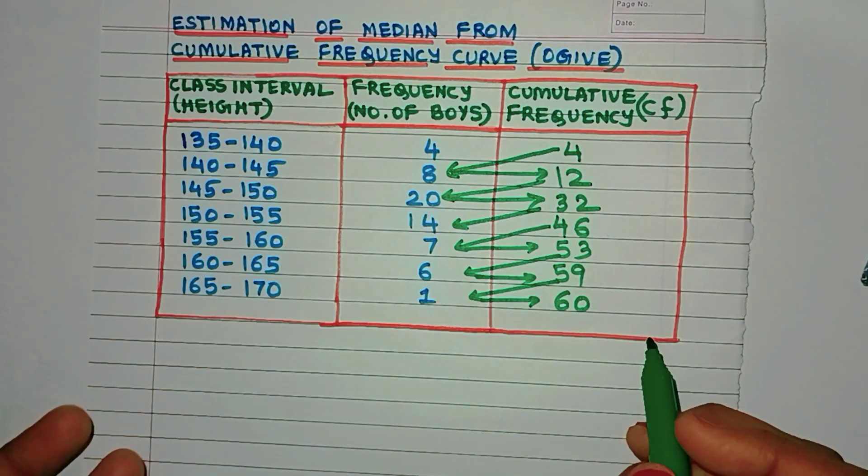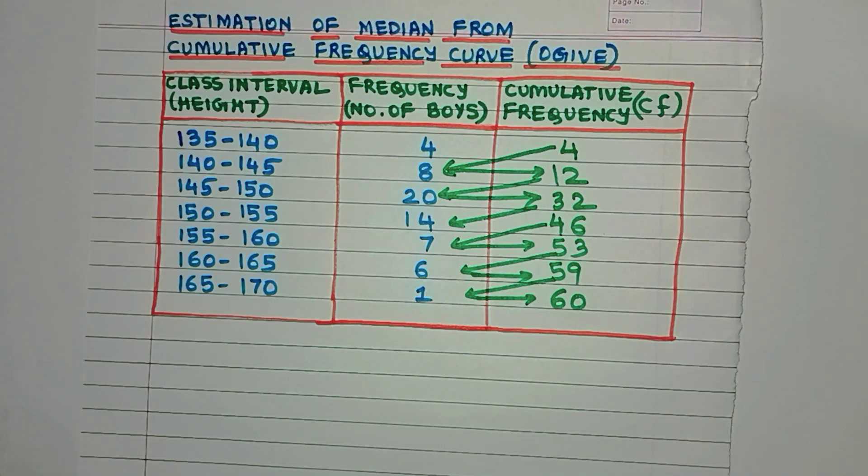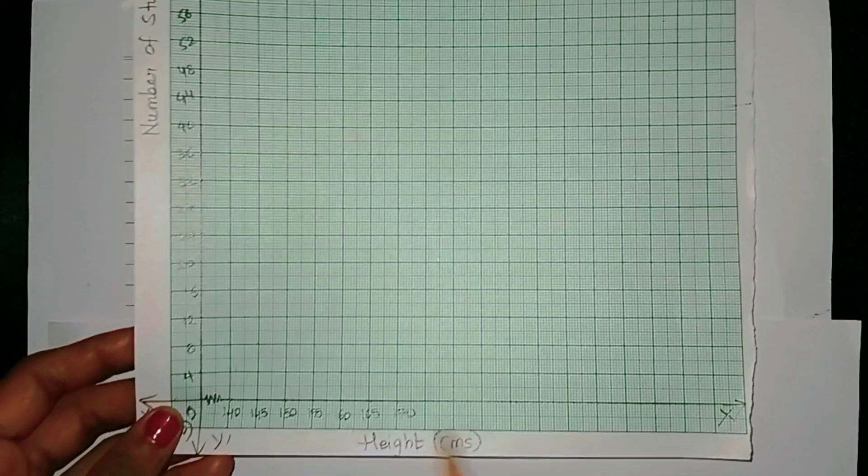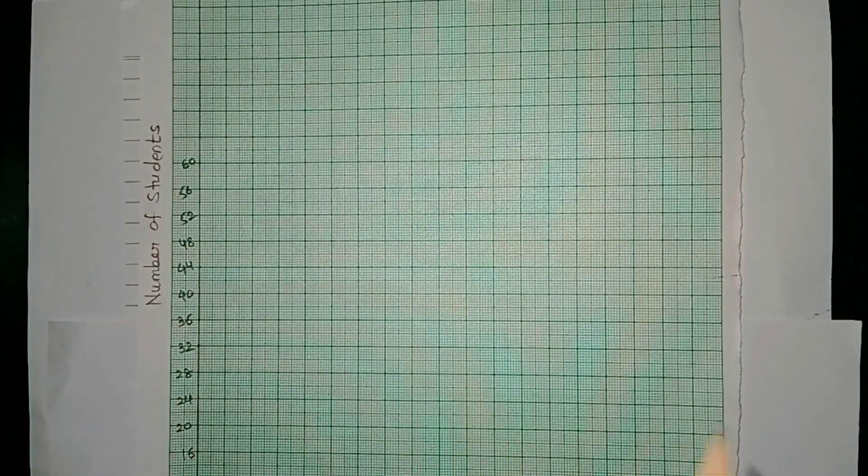Now did you also notice that when we get the last CF value, it is also the total number of observations in the data? Now we have all the data that is needed to plot the cumulative frequency curve.